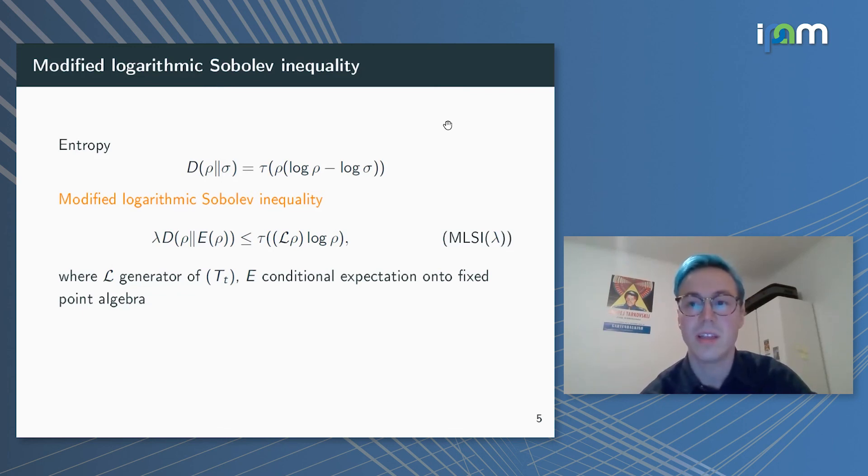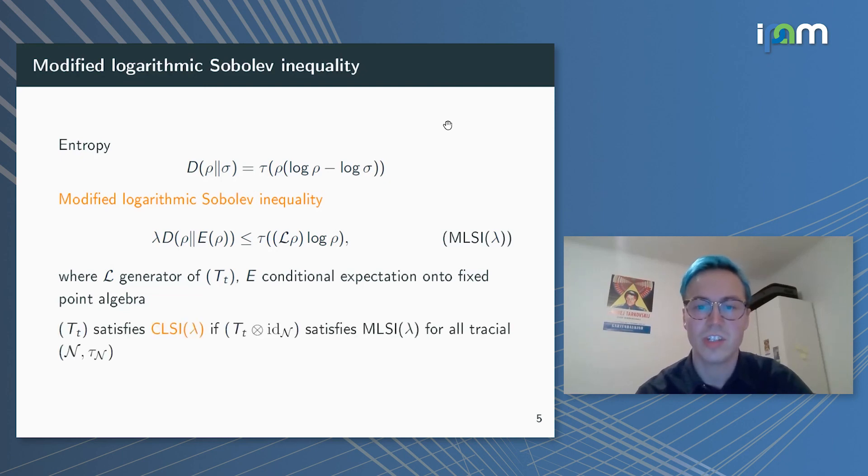In the quantum setting, this is unfortunately not true, but one can as a mathematician of course just define it in such a way that it's true. So we say that T_t satisfies the complete modified logarithmic Sobolev inequality if T_t tensorized with the identity on an arbitrary von Neumann algebra satisfies MLSI, and this version of the modified LSI then tensorizes.